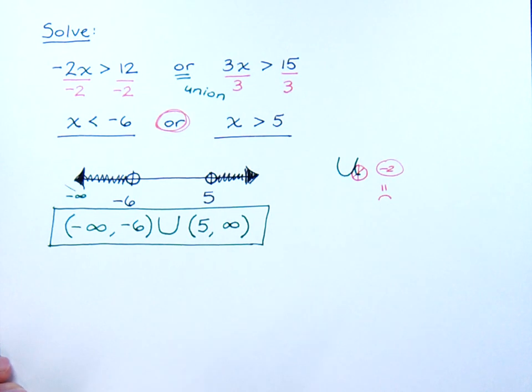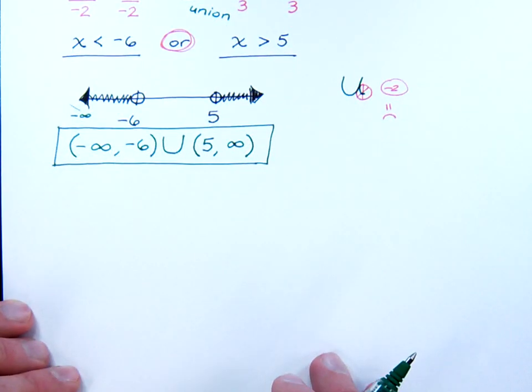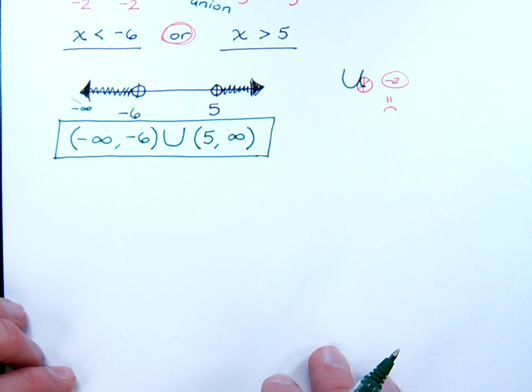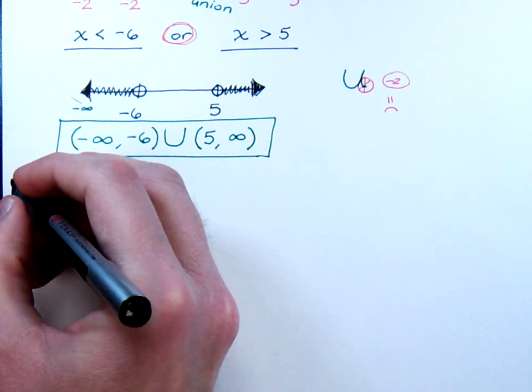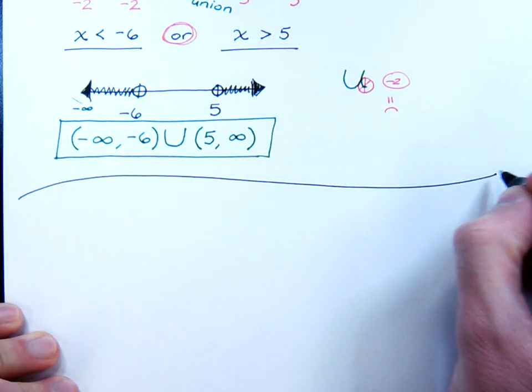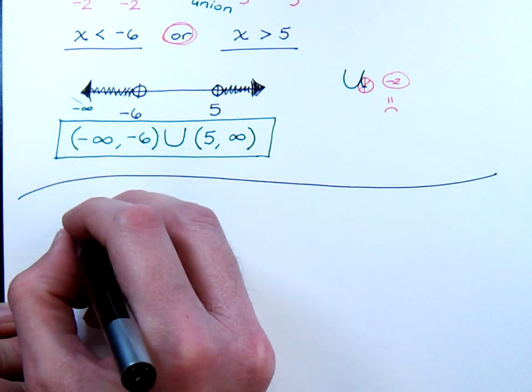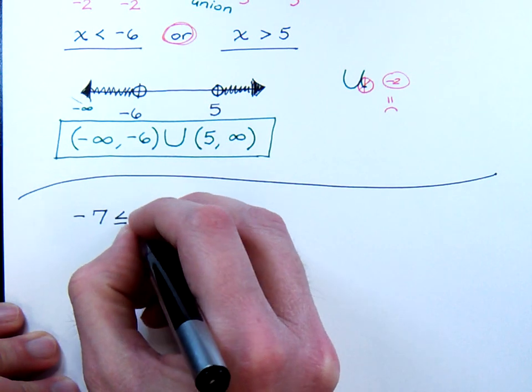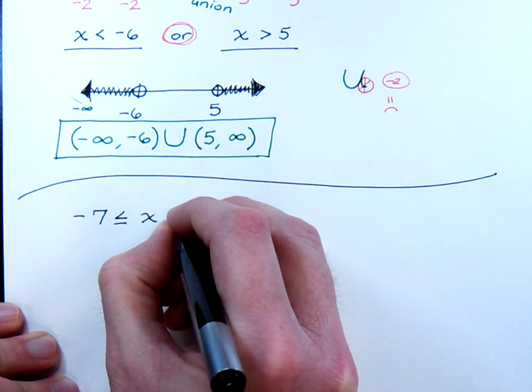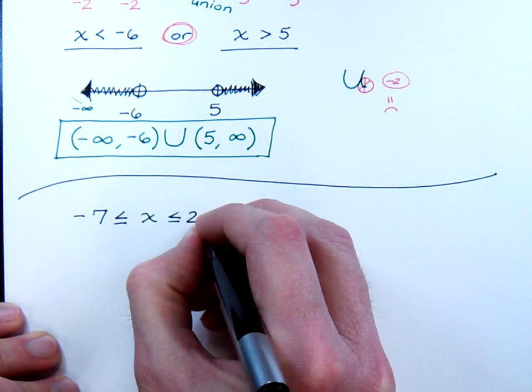All right, let's try an intersection, okay? Now, for this intersection, it doesn't look like an intersection just yet, but you have to understand what this means to us.